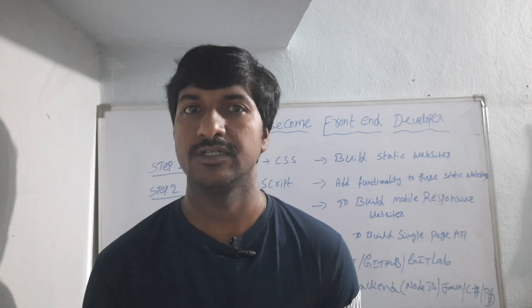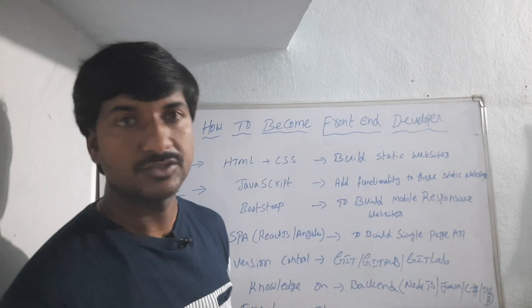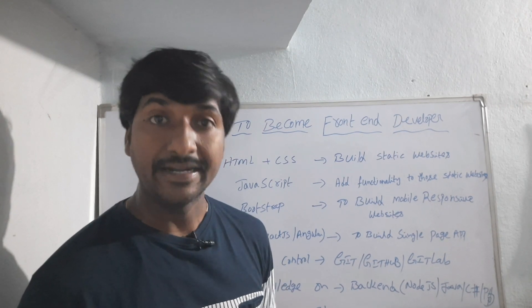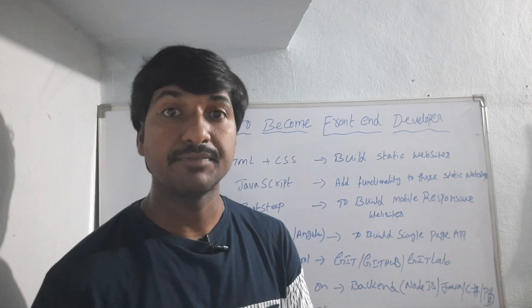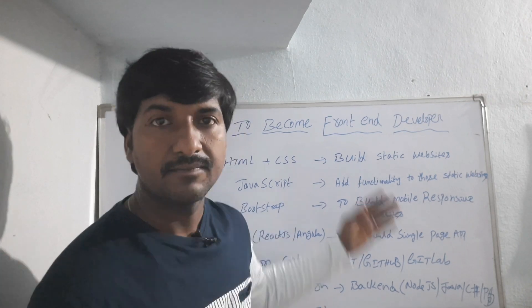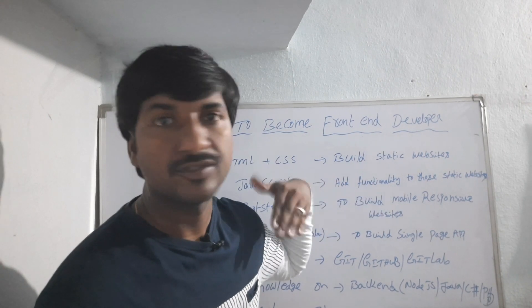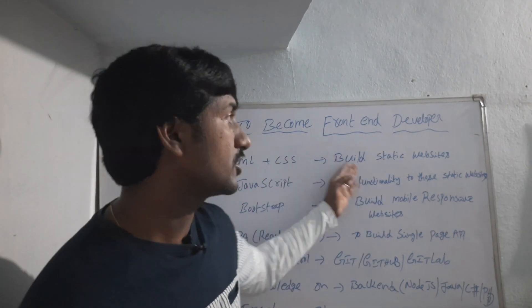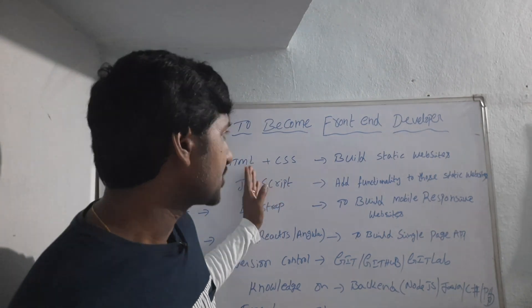What are the skills used to develop such websites? The basic skills required to become a front-end developer are HTML and CSS. By using HTML and CSS you can build static websites. Static means: when you enter a username and password and click the submit or login button, the website remains on the same page — it doesn't go to the next page. Such websites are static websites. So HTML and CSS can build static websites only, not dynamic websites.